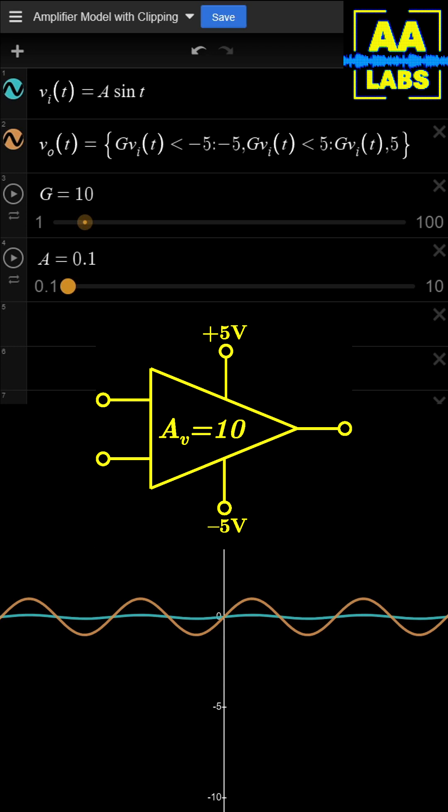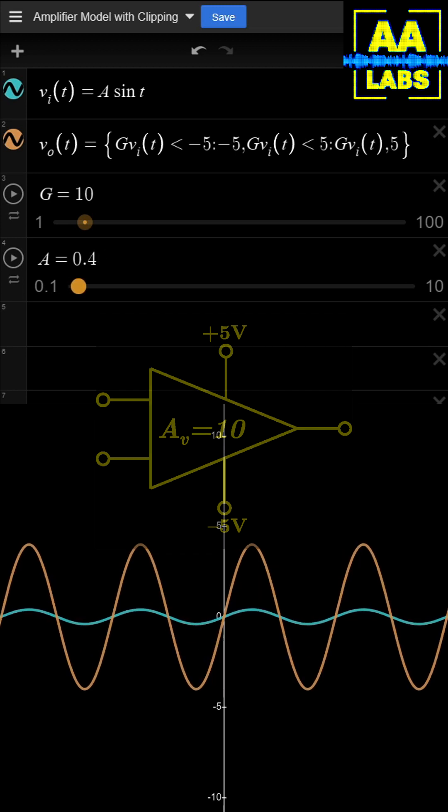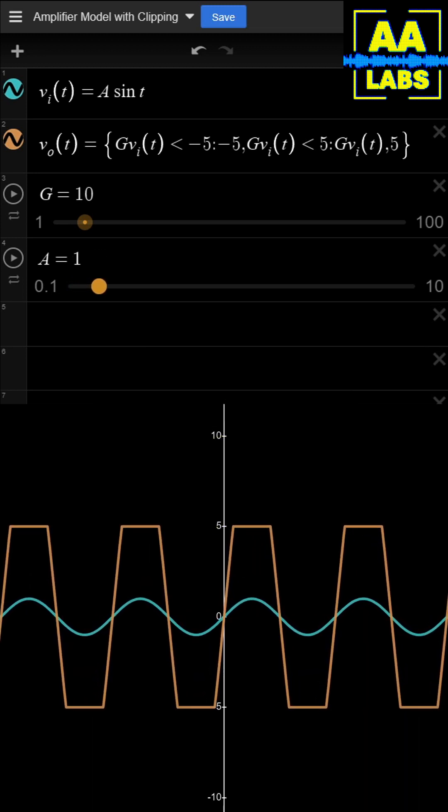Let's say we have an amplifier with gain 10 and a saturating voltage of plus or minus 5 volts. We then input a sine wave with amplitude 1.